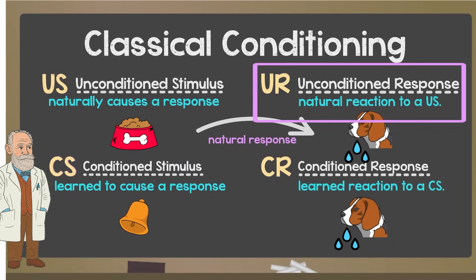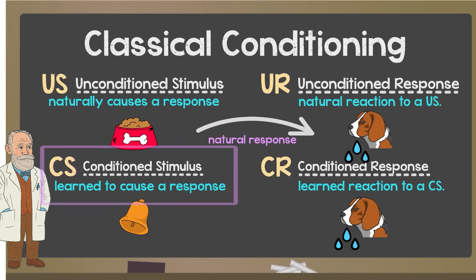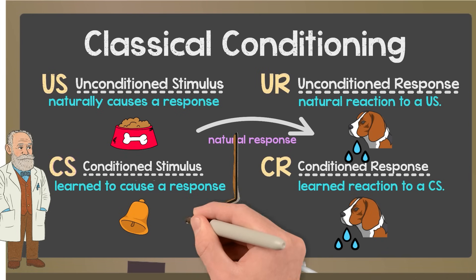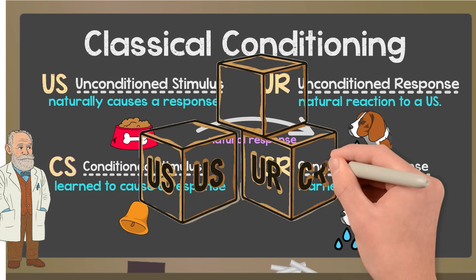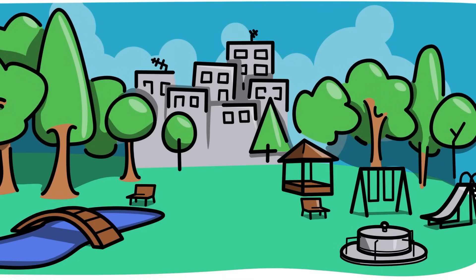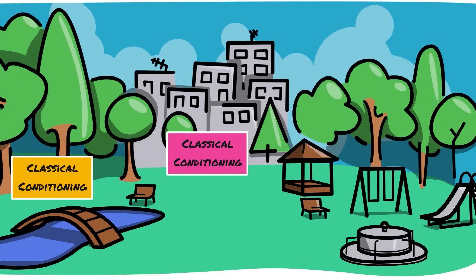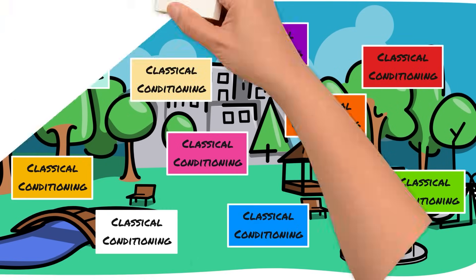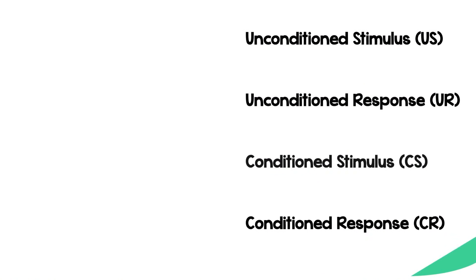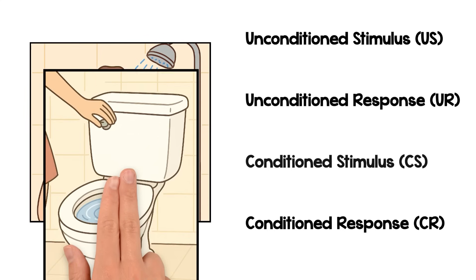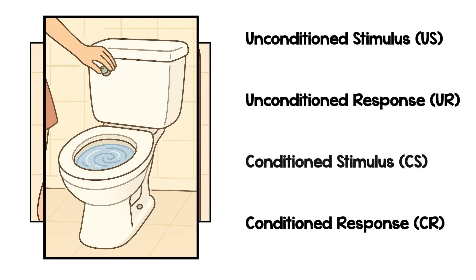These four ingredients — the unconditioned stimulus, unconditioned response, conditioned stimulus, and conditioned response — are the building blocks of classical conditioning. Once you understand them, you can spot this kind of learning almost anywhere. Take this example: